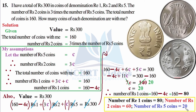Since c represents the number of rupee 5 coins, the number of rupee 5 coins equals 20. The number of rupee 1 coins equals 160 − 4c = 160 − 4×20 = 160 − 80 = 80. The number of rupee 2 coins equals 3c = 3×20 = 60. So the number of coins of each denomination: rupee 1 → 80 coins, rupee 2 → 60 coins, rupee 5 → 20 coins. Important point: unlike ratio problems, here we assume a direct variable, not a common factor. With this, question number 15 is completed.